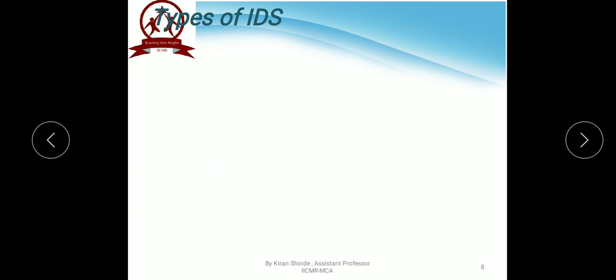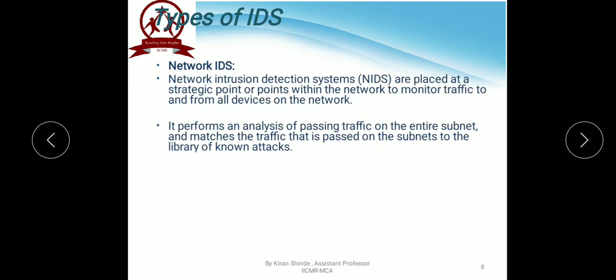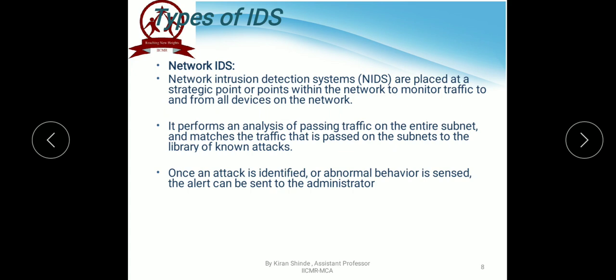The first type of IDS is Network IDS. Network IDS or NIDS are placed at strategic points within the network to monitor traffic to and from all devices. An example is a firewall placed between external and internal traffic flows. It performs analysis of passing traffic on the entire subnet and matches the traffic to a library of known attacks. Once an attack is identified or abnormal behavior is sensed, an alert is sent to the administrator. An example of a Network IDS would be installing it on the subnet where firewalls are located.